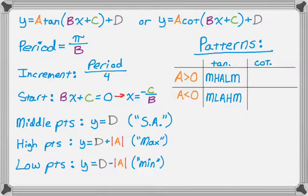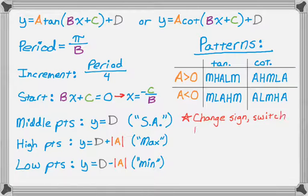Cotangent has a slightly different pattern, and the pattern is going to be asymptote, high, middle, low, asymptote. So all of the middle points for a tangent graph become asymptotes for the corresponding cotangent graph. The highs and lows remain the same, but the asymptotes of tangent become the middle points of cotangent. If you think about it, that makes sense, so try thinking about it. And then if A is less than zero, the high and low are going to switch again. So asymptote, low, middle, high, and asymptote. And I'll put a special note there. If you change the sign of A, you switch the highs and the lows. So every high becomes low, every low becomes high.